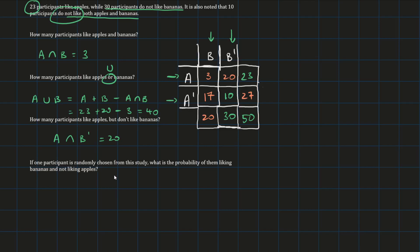Last question. If one participant is randomly chosen from this study, what is the probability of them liking bananas and not liking apples? So what is the probability of a random person from the study liking bananas and not liking apples? So again, both need to happen. We're essentially finding the probability of A dash, because we're not liking apples, intersection B, liking bananas.